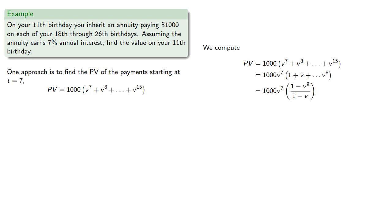And at 7% annual interest, v is the reciprocal 1 over 1.07, and so the present value will be, which we round down.